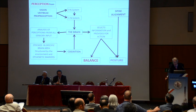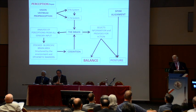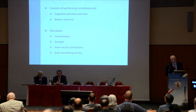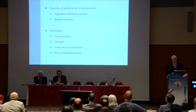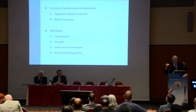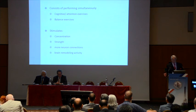The word posture takes all its importance at that level, because it's no longer the motto of your mom saying stand straight — it's more than that. The dual tasking consists of performing simultaneously a cognitive type of attention exercise and a balance exercise, no matter which one. Walking is a good balance exercise. There is no recipe for one more than the other, but you have to have a combination of double or triple tasks to maintain this level of perception and cognition, which reflects on your quality of life.